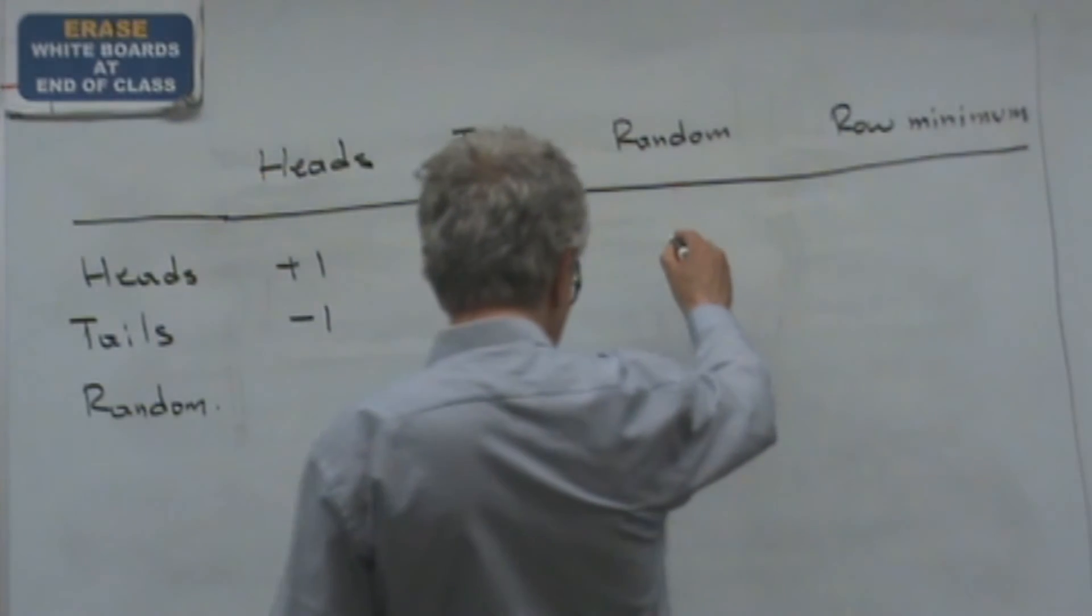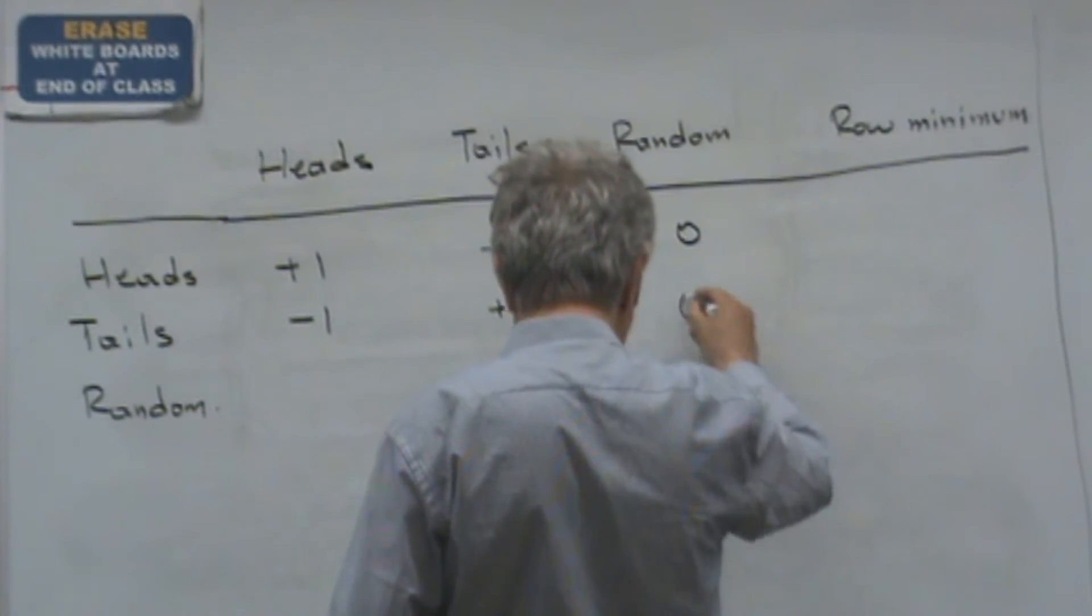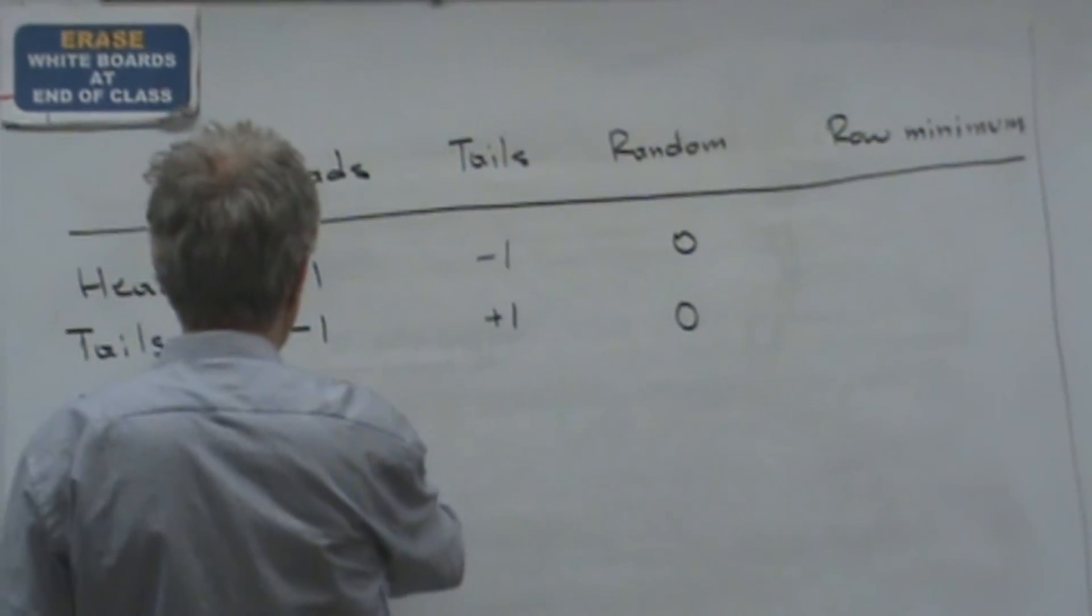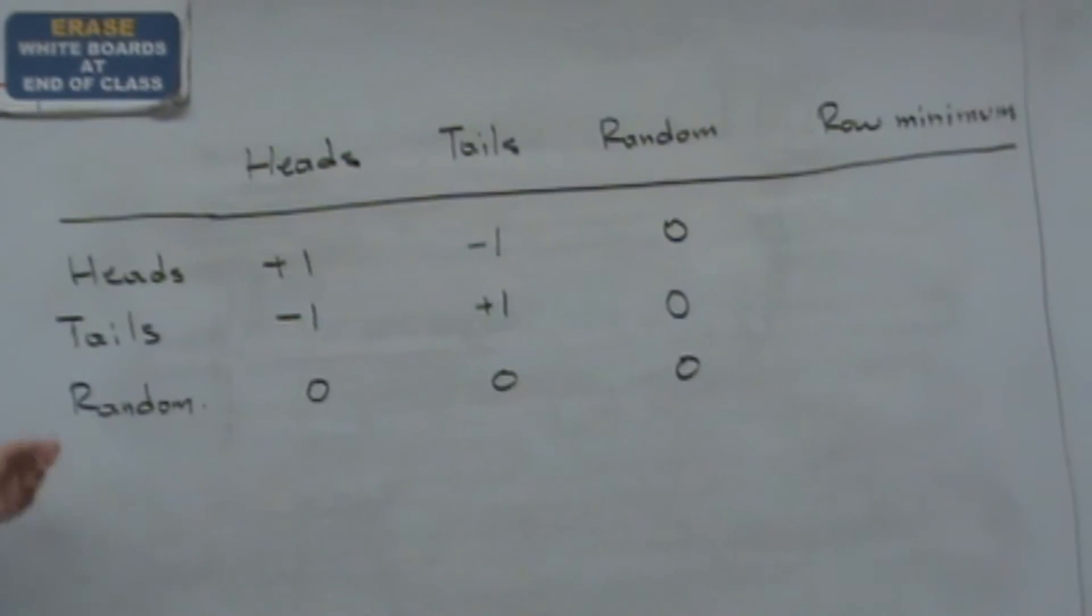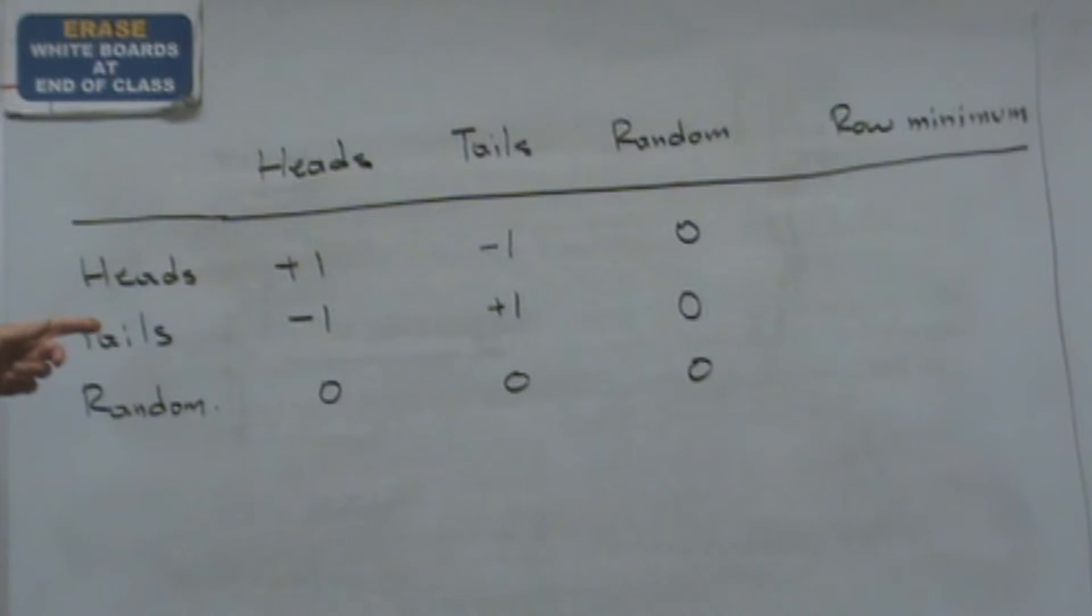So we have now zero, zero, zero, zero. That means if they opt for the random strategy, then they will make nothing. They will not lose anything, but they will not make any profit. Now let's see what is the equilibrium point if there is one considering now the enlarged matrix.